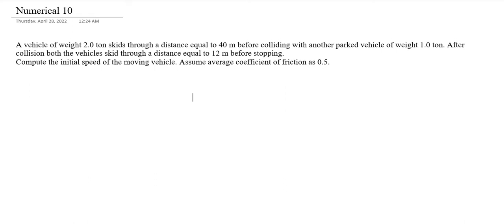Now I have another numerical. This numerical is an accident or collision case. This is a case of a 2-ton vehicle. It skids through a distance of 40 meters before colliding with another parked vehicle. After collision, both vehicles skid through a distance of 12 meters before stopping. We have to compute the initial speed of the moving vehicle, and we assume the friction coefficient is 0.5.